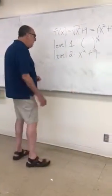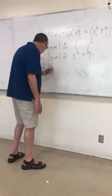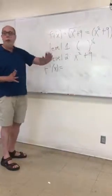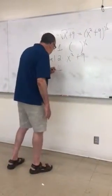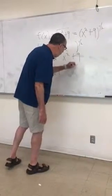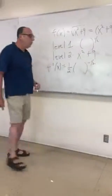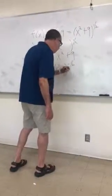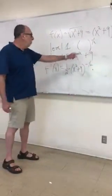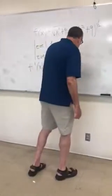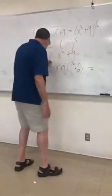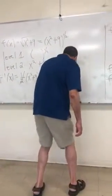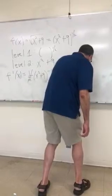To get f prime of x, we take the derivative of level 1. We need to differentiate something to a power: bring the power down, and you have that something to one less power. That something is x squared plus 9. Times the derivative of level 2, which is 2x. Simplifying, the one-half and the 2 cancel, and we end up with x over the square root of x squared plus 9.